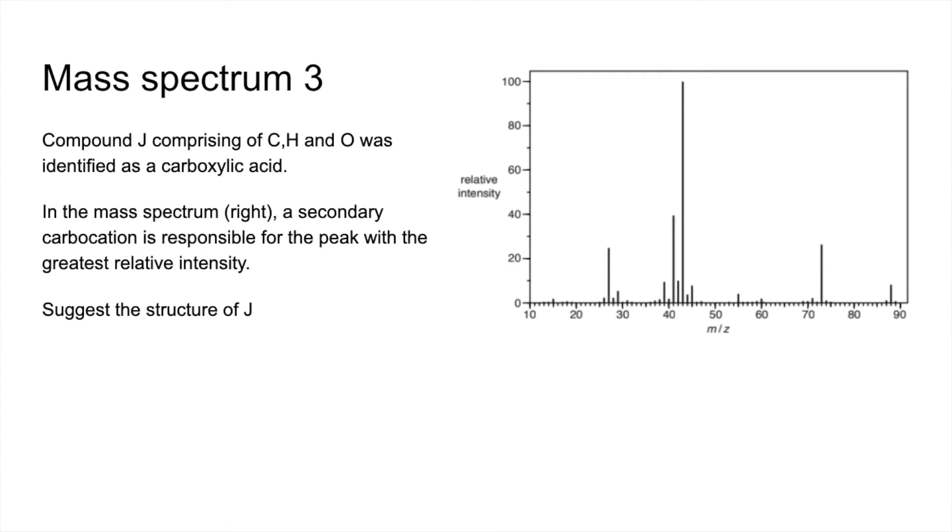Final one, compound J, again comprises of C, H and O. It's been identified as a carboxylic acid. So the mass spectrum, a secondary carbocation is causing the peak with the highest or the greatest relative intensity. So that's obviously the tallest peak there.